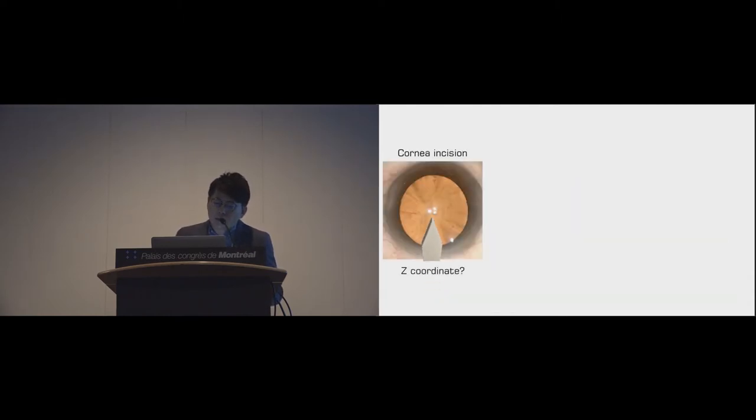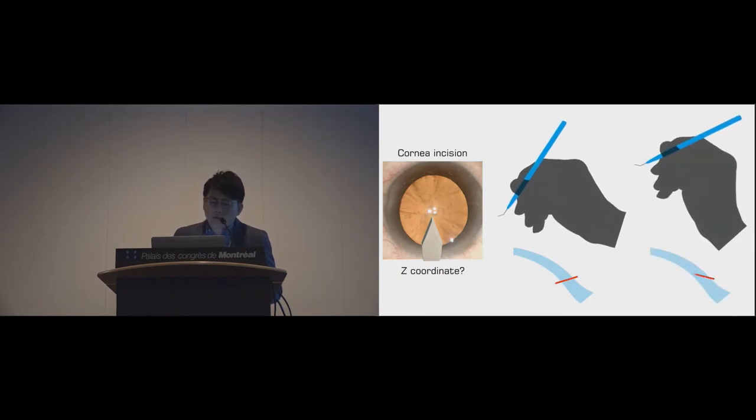The depth of the instrument tip is difficult to judge through the microscope. For example, trainee may speculate two different holding angles of the knife according to the image. Although they look similar, one of them may result in a bad wound.